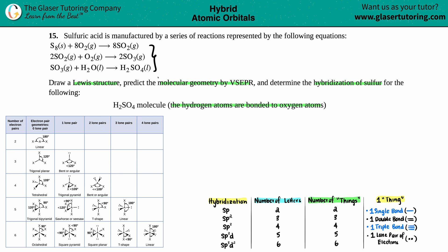We don't really need to know that sulfuric acid is manufactured in three steps. All we have to do is draw the Lewis structure, give the geometry, and the hybridization for the H2SO4 molecule. Just know that even if they didn't say draw the Lewis structure and still ask for molecular geometry and hybridization, the easiest thing to do is draw the Lewis structure, because when talking about hybridization or geometry, you have to draw the Lewis structure just to see what you're looking at.